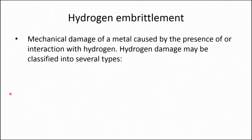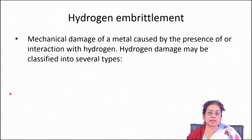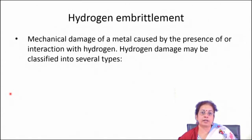Hydrogen embrittlement is a phenomenon occurring in environments containing hydrogen. Hydrogen is a very dangerous species because it can cause failure by reacting with the surface and forming hydrides. Those hydrides are very brittle in nature. In some metals, hydrogen species can diffuse in as atoms and then convert from atomic hydrogen to molecular hydrogen deep inside the metal, applying high pressure by that conversion process.